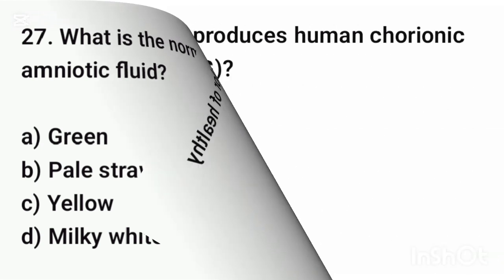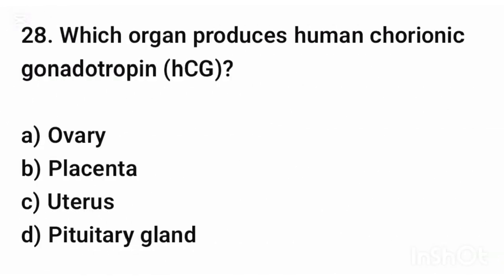Question number twenty-eight. Which organ produces human chorionic gonadotropin (HCG)? The correct answer is option B: Placenta.